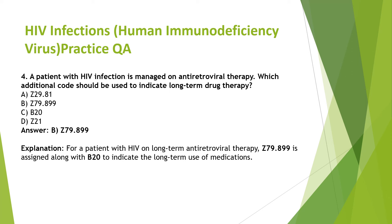Fourth question: a patient with HIV infection is managed on antiretroviral therapy. The guideline covers long-term usage of medication. The code to use is Z79.899, which is assigned along with B20 for a patient with HIV on long-term antiretroviral therapy.